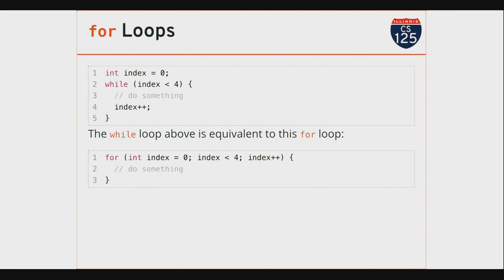We've looked at a while loop; a for loop starts to get a little bit more interesting. This while loop up top is equivalent to this for loop. Let's go through this carefully. 'for' is a reserved word in Java — you can't have a variable called 'for'. It has special meaning: you're creating a loop. For loops work differently than while loops. In a while loop I had one thing inside the parentheses — a condition I checked every time I entered the loop. In a for loop I've got three things separated by semicolons.